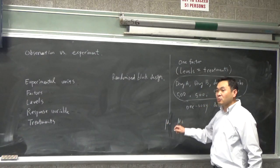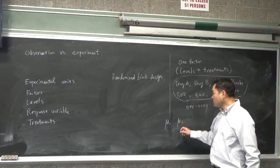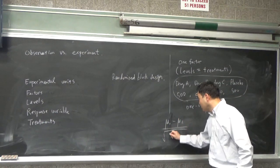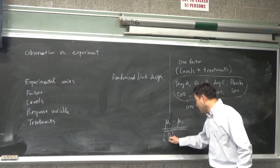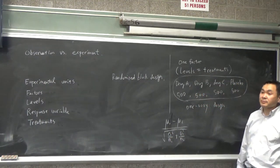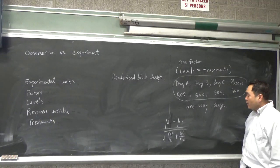and if you wanted to know if one's bigger than the other, the test statistic was you subtract and you divide it by square root of sigma 1 squared over N1 plus sigma 2 squared over N2. That's how we did it, right?